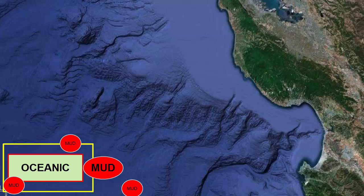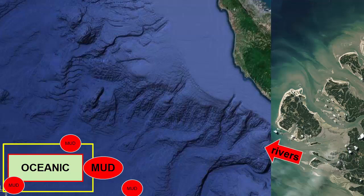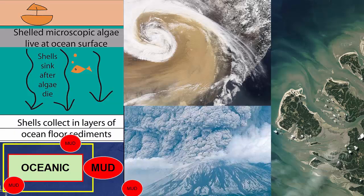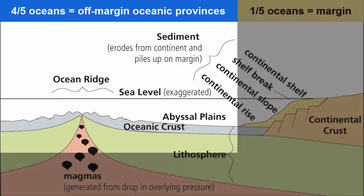Where do these muds come from that get out to the oceanic zone? They come from nearby rivers that have a lot of suspended sediment, airborne dust and ash that settles on the surface, and the shells and debris of organisms that live in the surface waters and settle to the seafloor when those organisms die. The oceanic zone represents four-fifths of the world's ocean environments.